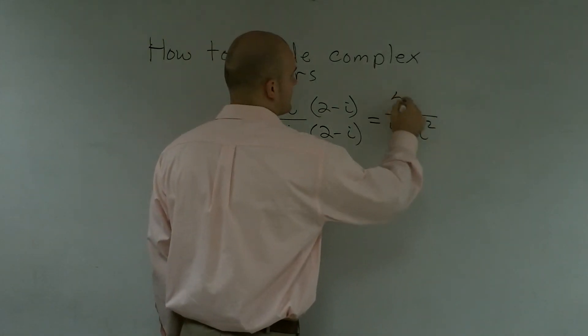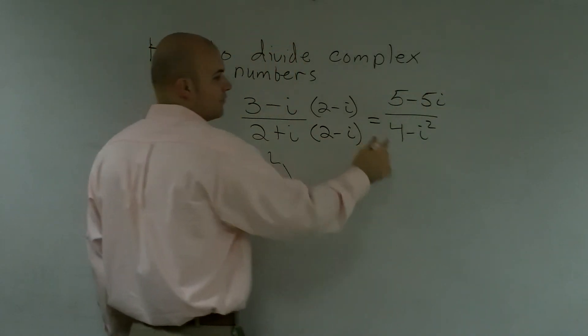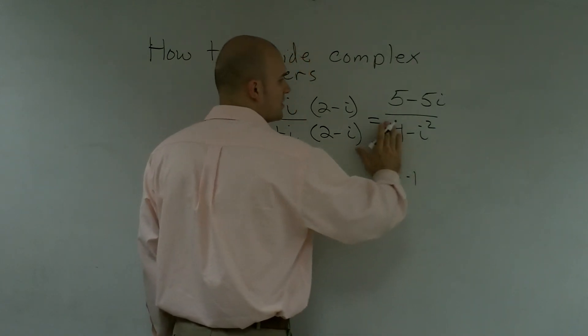So up here, 5 minus 5i. However, we know that i squared is a negative 1. So this is really 4 minus a negative 1, which is 4 plus 1, which becomes 5.